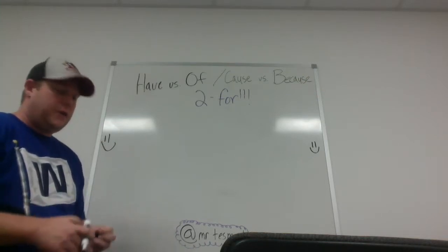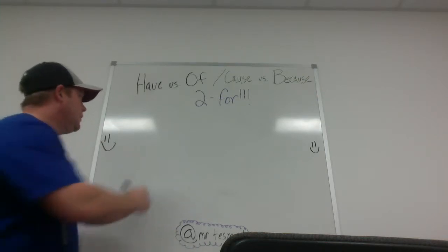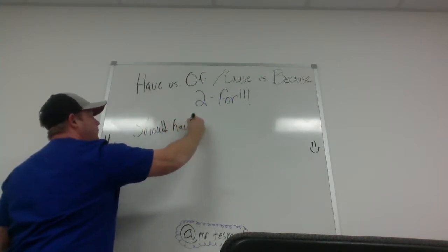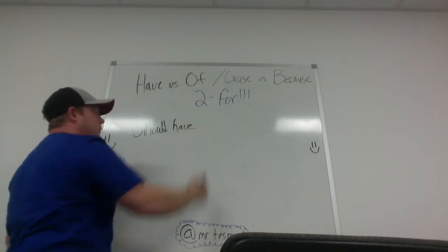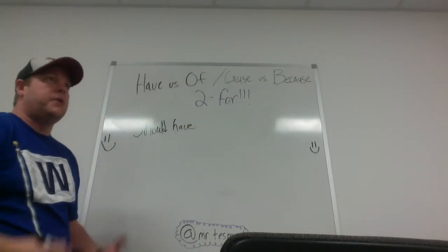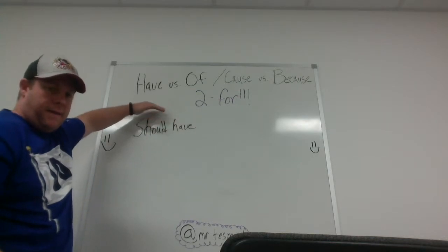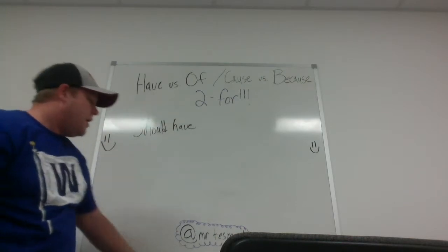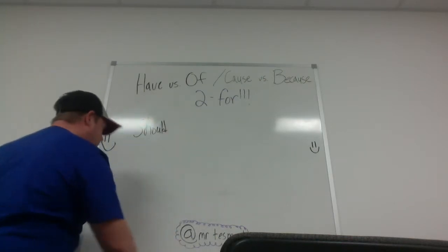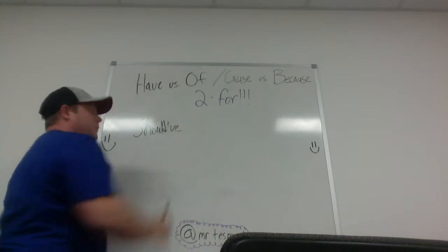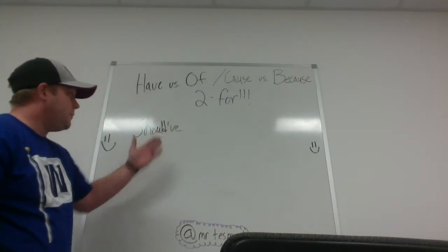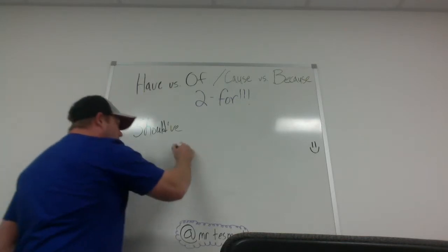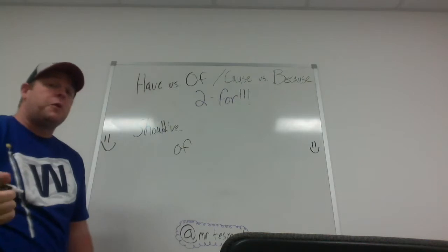We're going to talk about have versus of. Here's where the problem usually comes in. When you say 'should have,' meaning that you were supposed to or it would have been good if you did something — when you thought you should have done something — except we usually shorten this word, don't we? We usually shorten this into 'should've.' It means the same thing; it's apostrophe VE. But when we say that, it sounds like we're saying the word 'of.' So that's where we actually make the mistake.